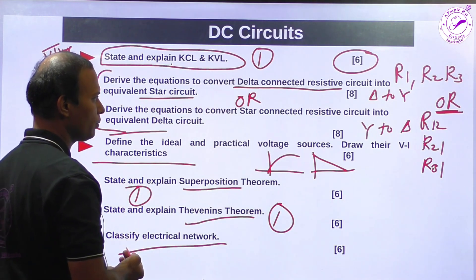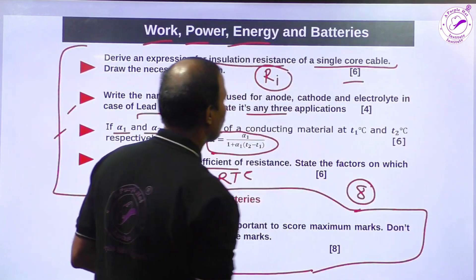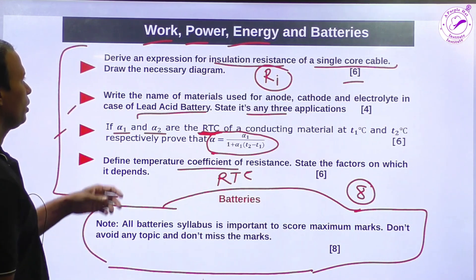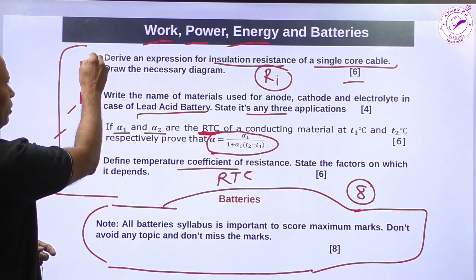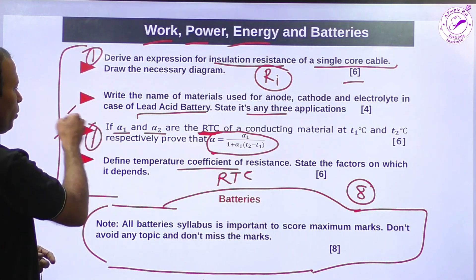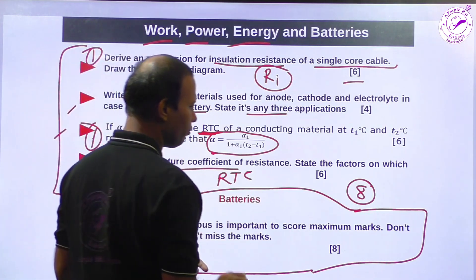So problems: KVL, KCL circuits, then superposition theorem. You must focus. Similarly, insulation resistance here, chance of problem, and RTC alpha, this type of problem. You have to follow finding RTC, finding temperature.